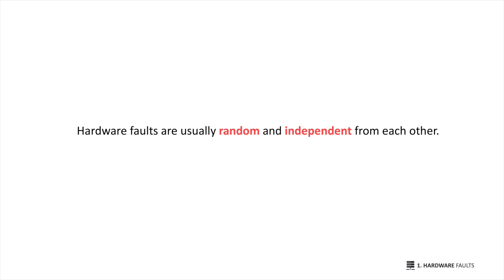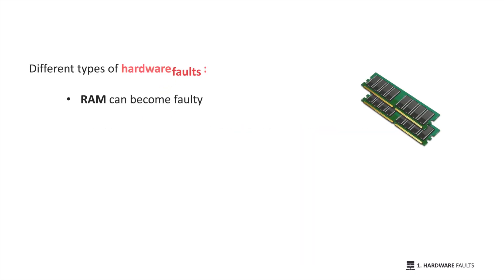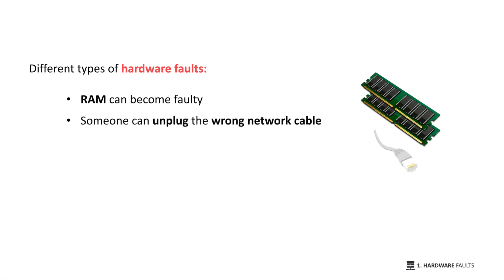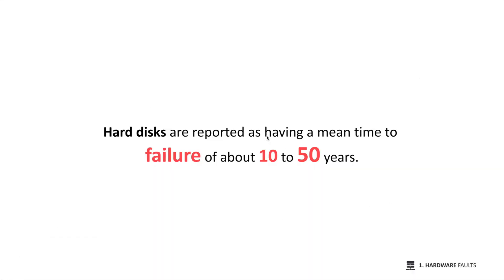Let's start with hardware faults. We usually think of hardware faults as being random and independent from each other — one machine's disk failing does not imply that another machine's disk is going to fail. Here are different types of hardware faults: RAM can become faulty, someone can unplug the wrong network cable, and you can simply have a power grid blackout.